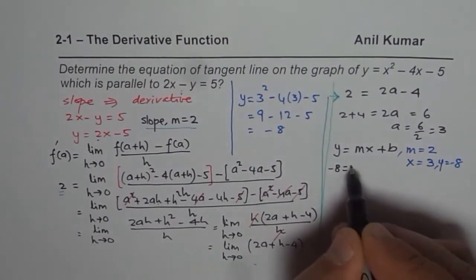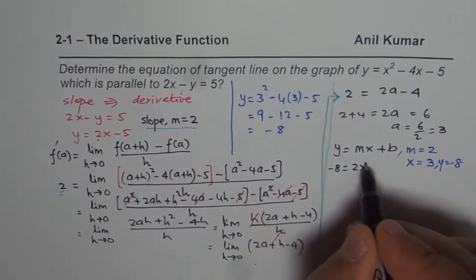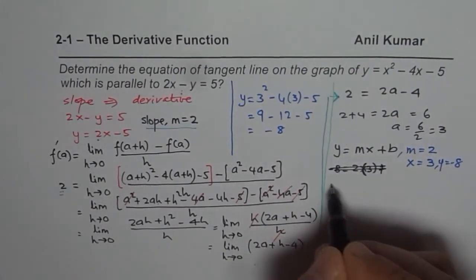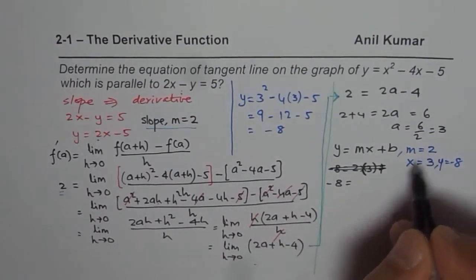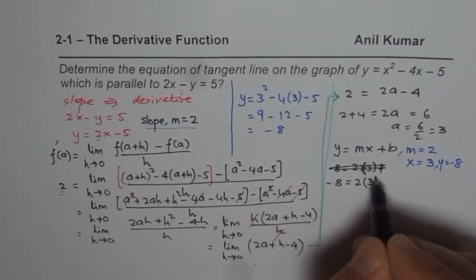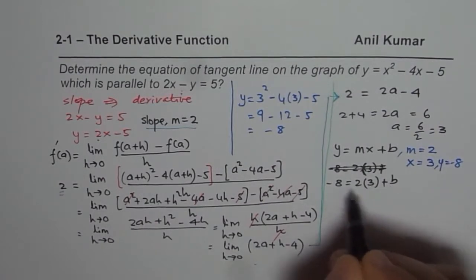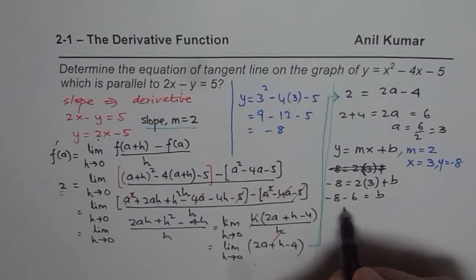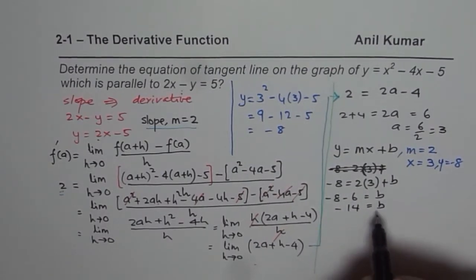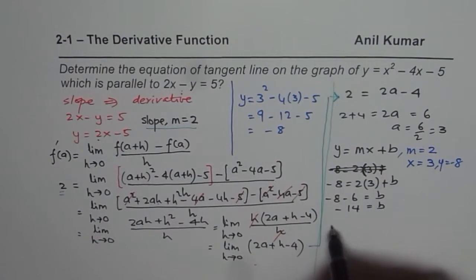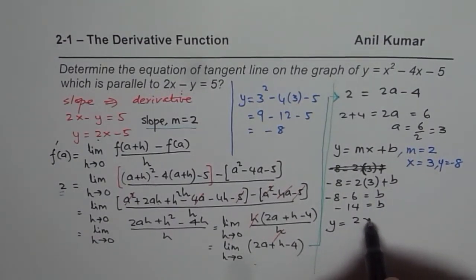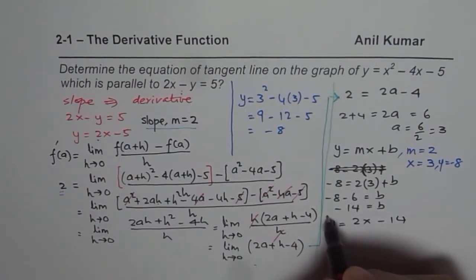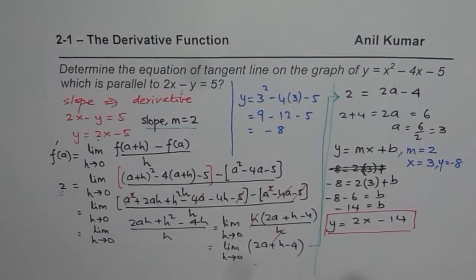So y is -8. We have -8 = 2x... let me rewrite this. So -8 = 2(3) + b. Bringing it to the left side, we get -8 - 6 = b, and that is indeed -14. So we get the equation of tangent line, which is y = 2x - 14. That becomes the equation of the tangent line on the given parabola where the slope is going to be same as required.